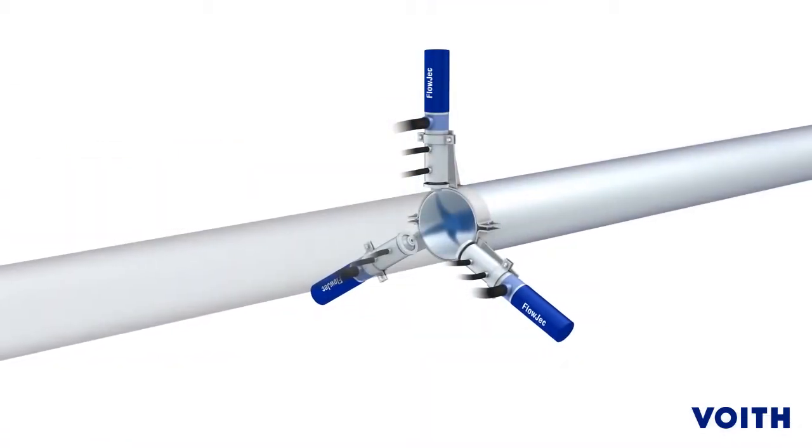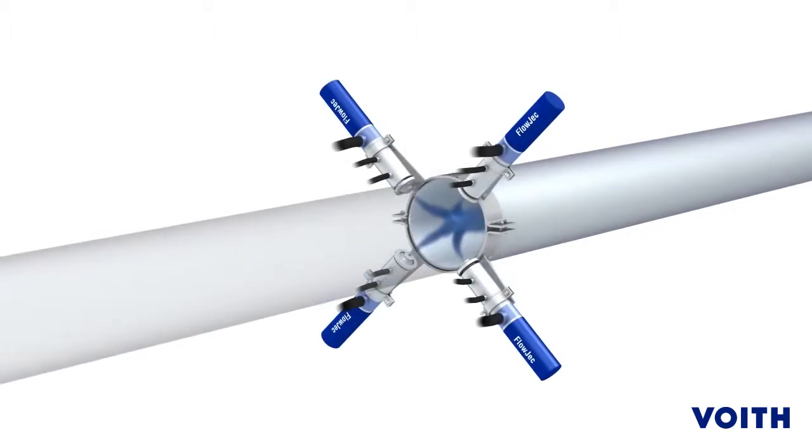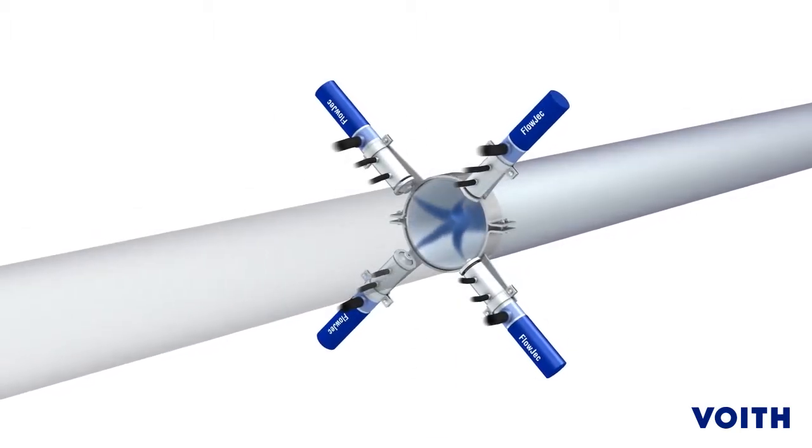The chemical is also distributed homogeneously because it's dosed by up to six adjectors, depending on the size of the process stream.